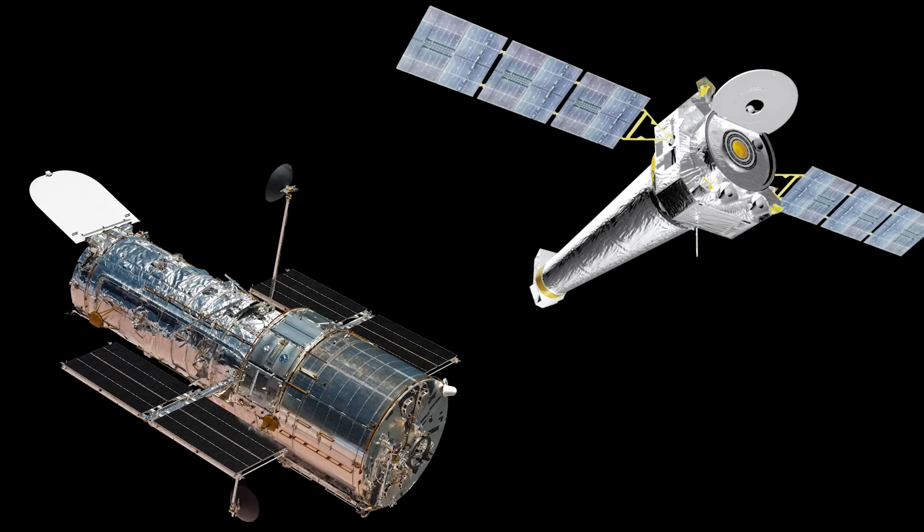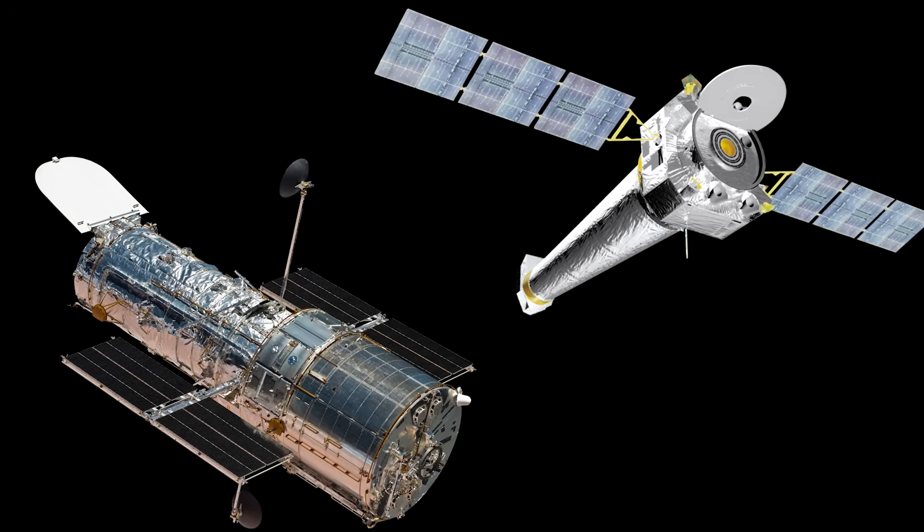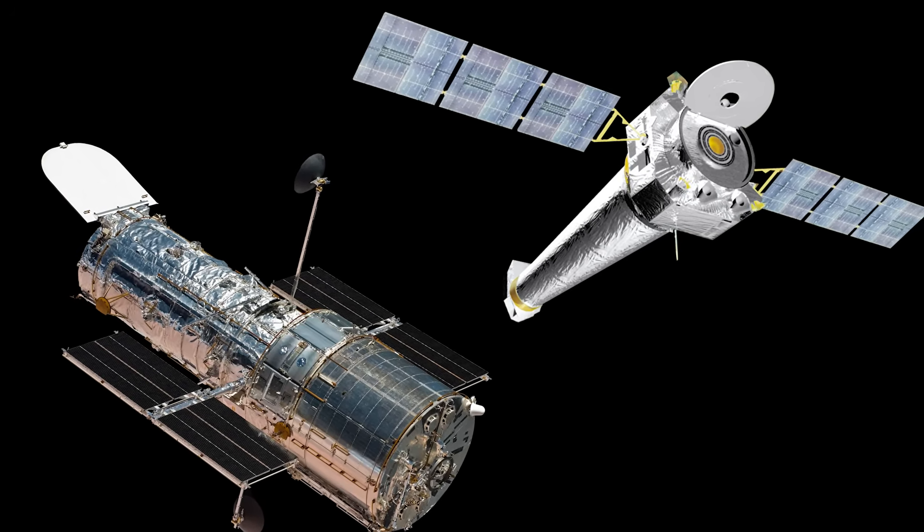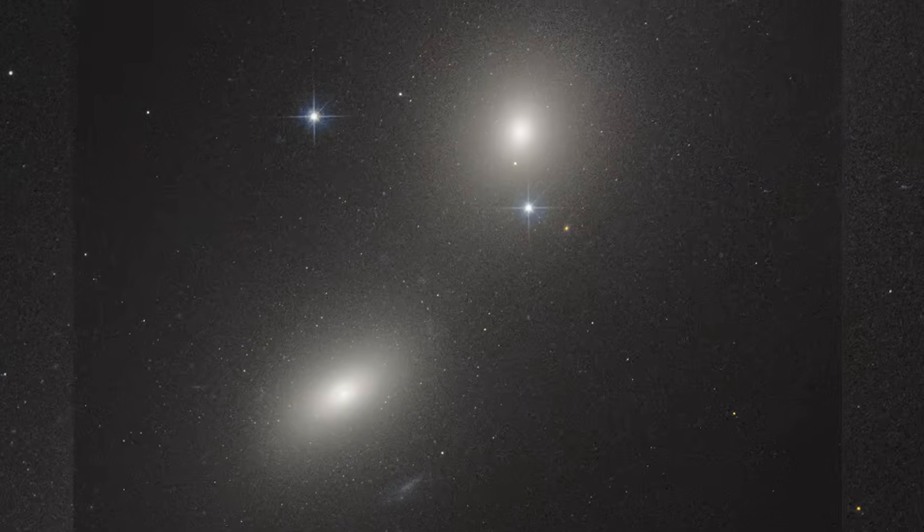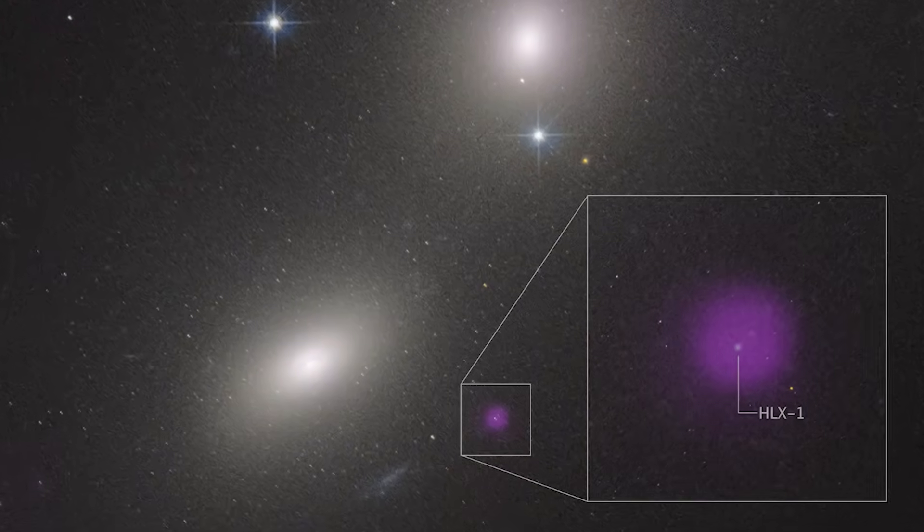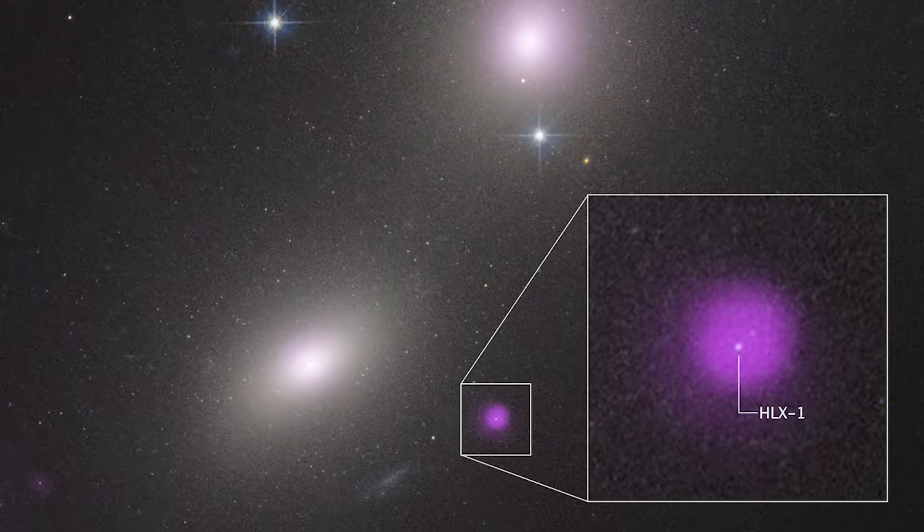Hubble and NASA's Chandra X-ray Observatory teamed up to study one of these rare events in a galaxy called NGC 6099, where a source known as HLX1 lit up the sky.